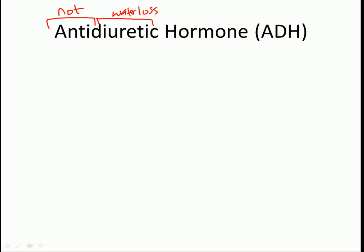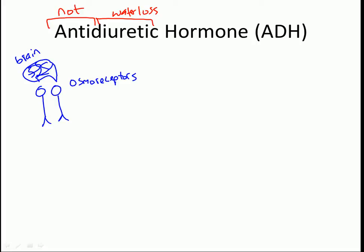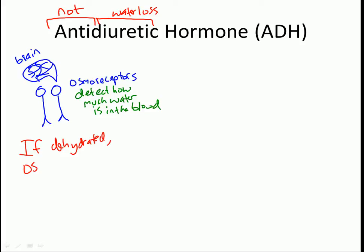In your brain, you have a special type of cells called osmoreceptors, often drawn like little stick figures. The job of the osmoreceptors is to detect how much water is in the blood. So let's say you're dehydrated — the osmoreceptors detect a low amount of water in the blood.